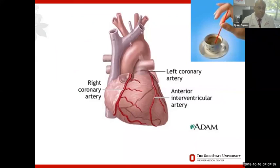If anybody has coffee today and is stirring it with these little straws — these little coffee stirrers are about three millimeters in diameter, and that's about the size of the human coronary artery in an average-sized male. So these are really small arteries, and it makes it so fascinating what we can put in those arteries: ultrasound cameras, lasers, balloons, stents. Let's talk about what's happening in the wall of the artery.